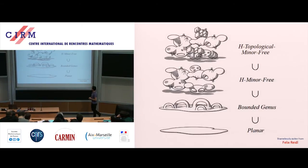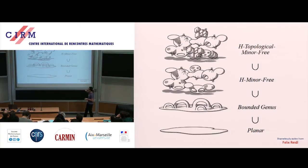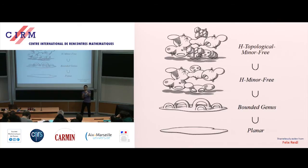Here is a picture showing how the different classes of graphs — minor-free, topological-minor-free, and so on — look like. Planar graphs, bounded genus, H-minor-free, and topological-minor-free graphs are really thought of in terms of tree decompositions: you take some nice-looking graphs and glue them together along small adhesions.